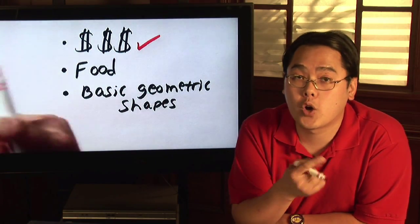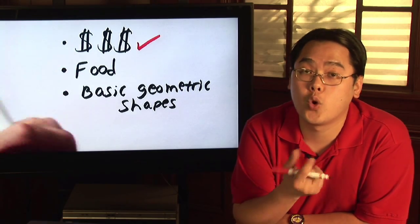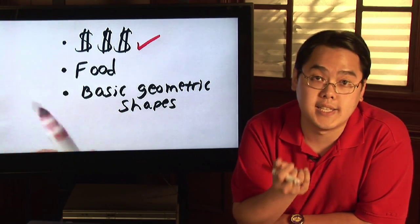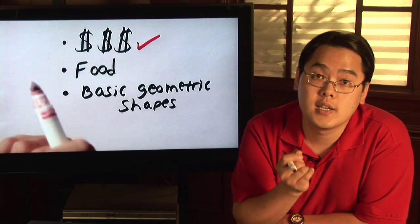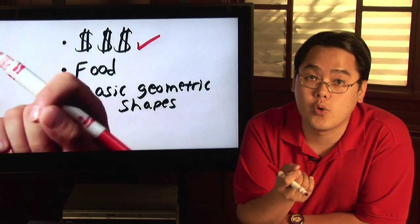For example, we know a quarter, which is 25 cents, is a quarter of a dollar or one-fourth. A dime, which is 10 cents, is 10 out of 100 or one-tenth.